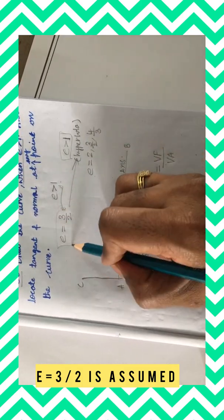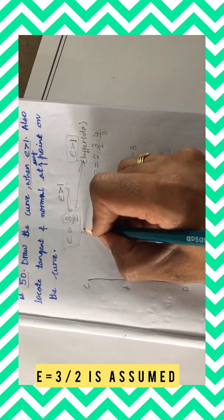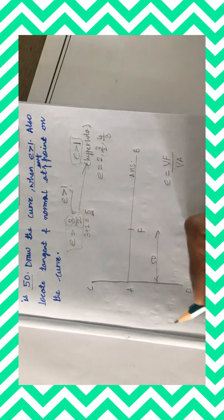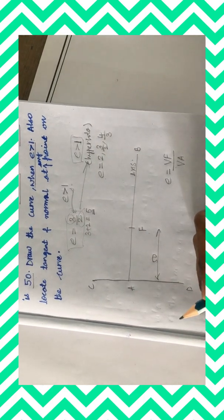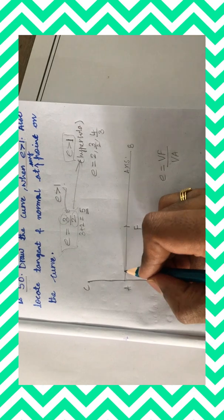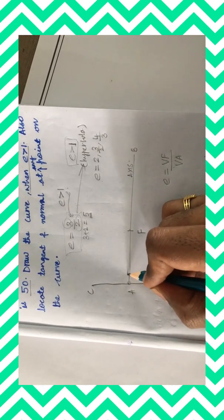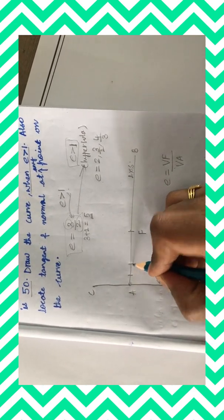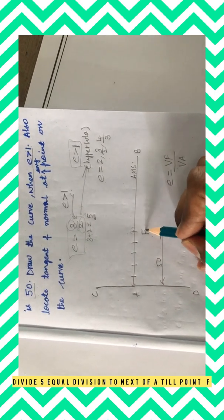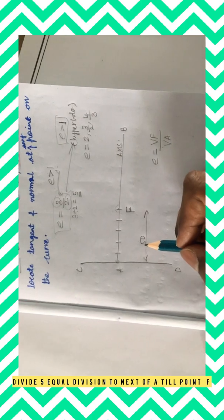I am considering e equal to 3/2 for today. What you are supposed to do is add the numerator and denominator: 3 plus 2 equals 5. That means we divide the line from the directrix to the focus into 5 equal divisions, keeping the directrix as 0. So 1, 2, 3, 4, and on the fifth division is the focus.